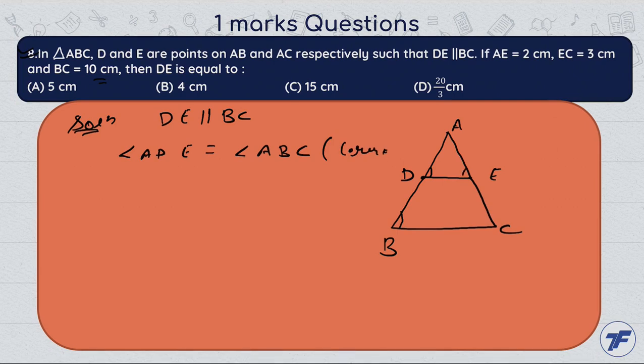Similarly, angle AED equals angle ACB. Okay, now here we have what is going to be angle-angle criteria. Triangle ABC is similar to triangle ADE. Clear? But this triangle is similar to complete triangle ABC.